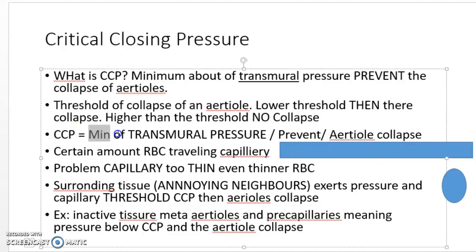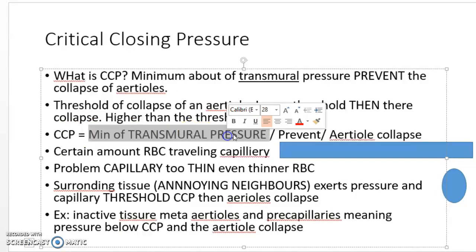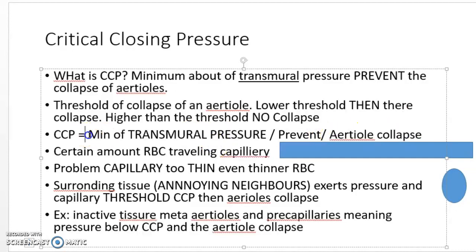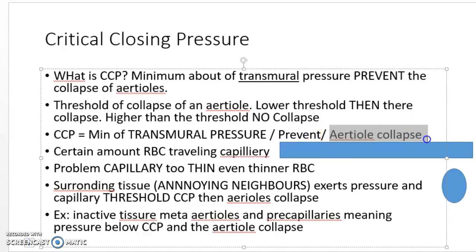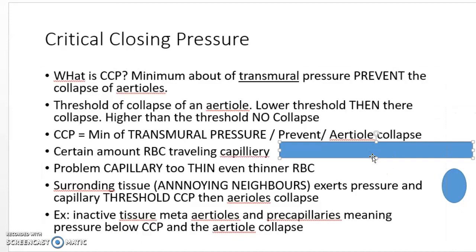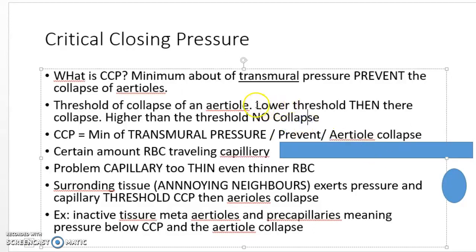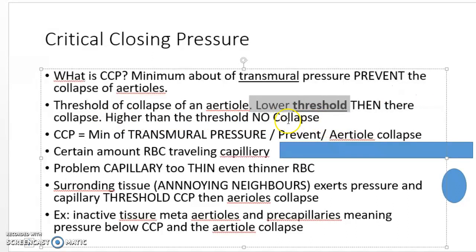We can write this as an equation: the critical closing pressure is the minimum amount of pressure you need to prevent the collapsing of the arterial. Think of it as the minimum pressure required to prevent a building from collapsing — you don't want this building, which is the capillary, to collapse. The threshold is a key concept here: if pressure is lower than the threshold, there is collapse; if higher, there is no collapse.